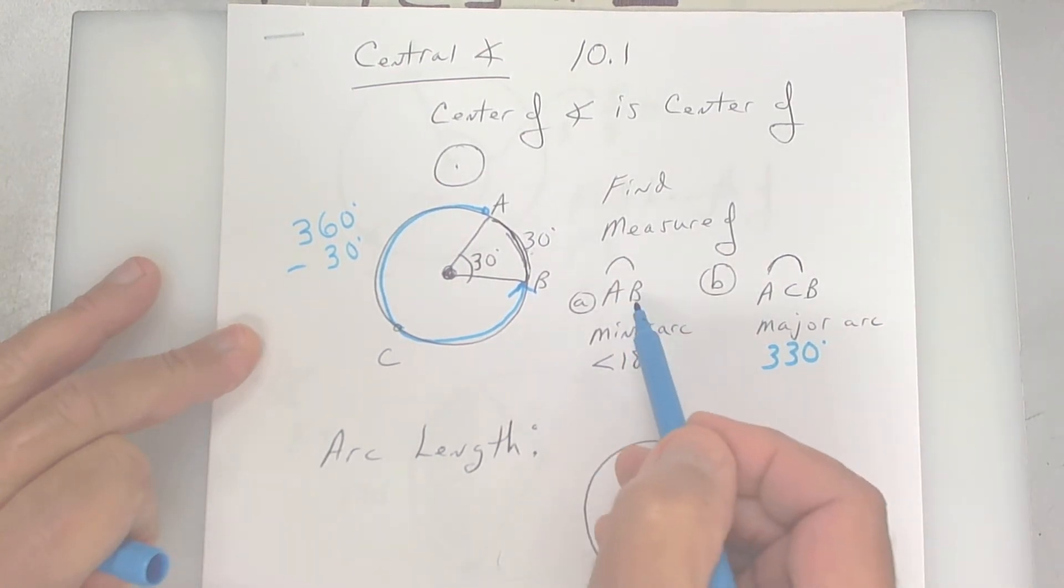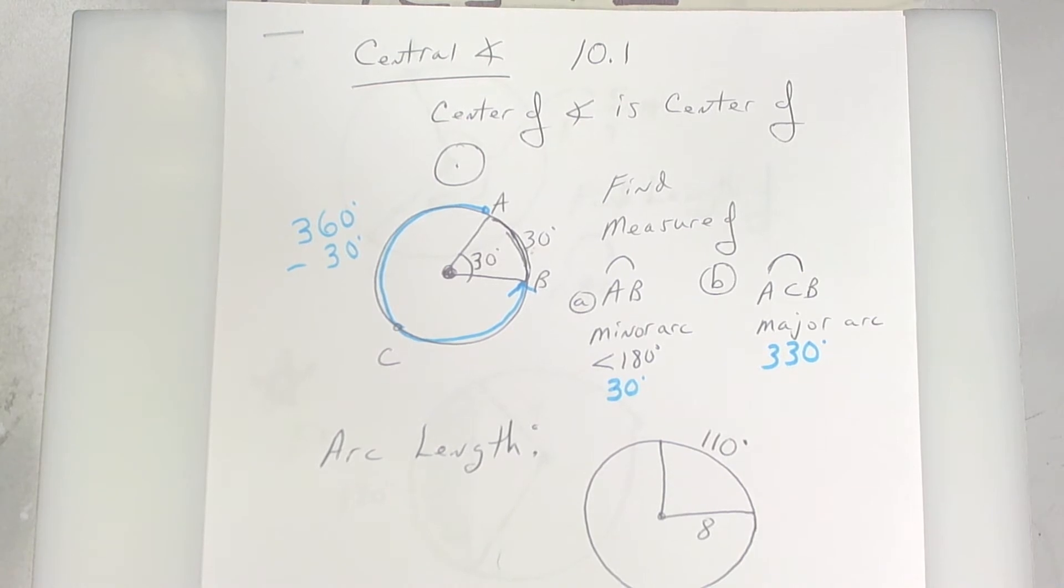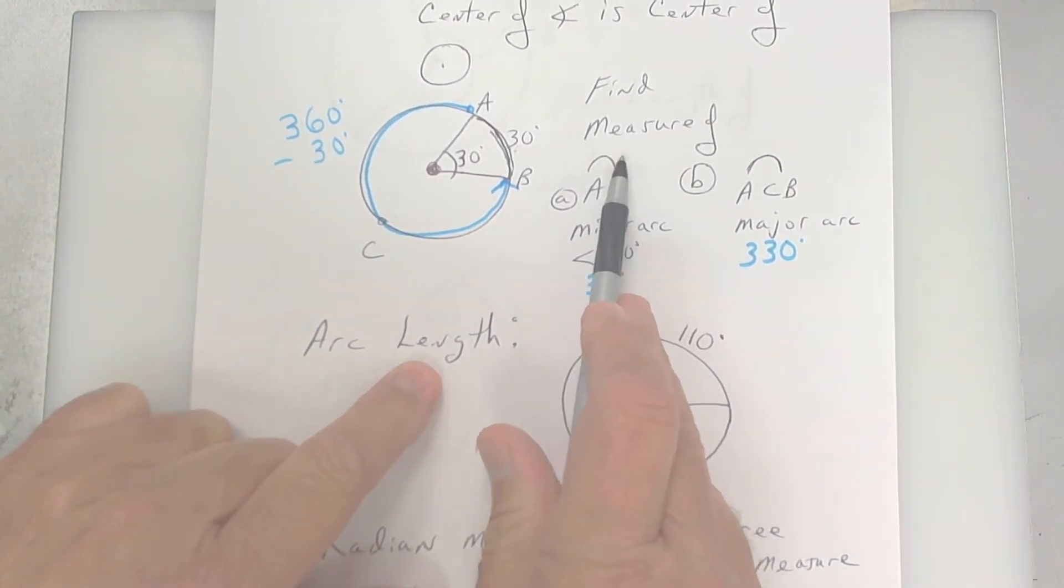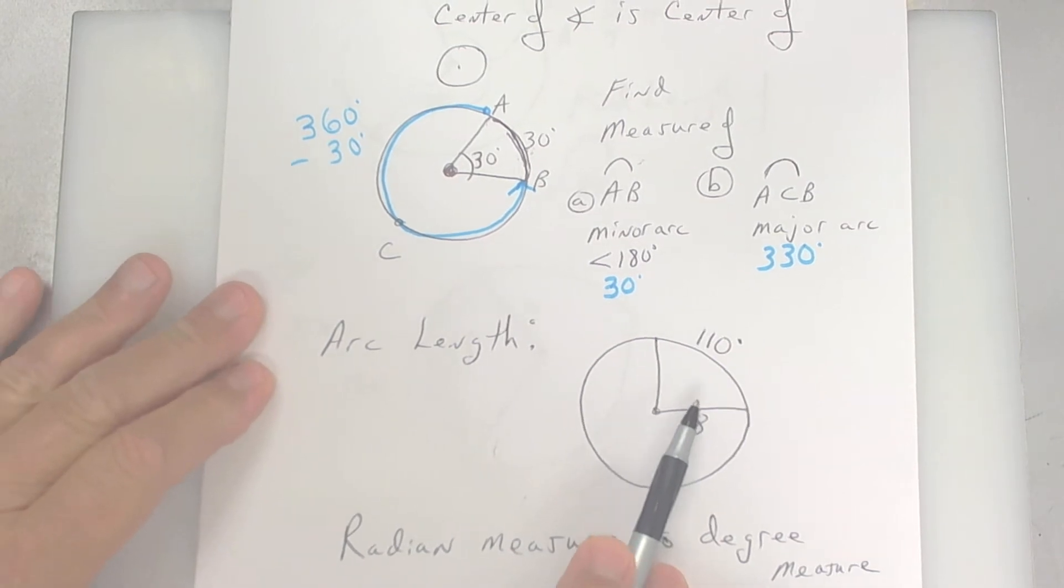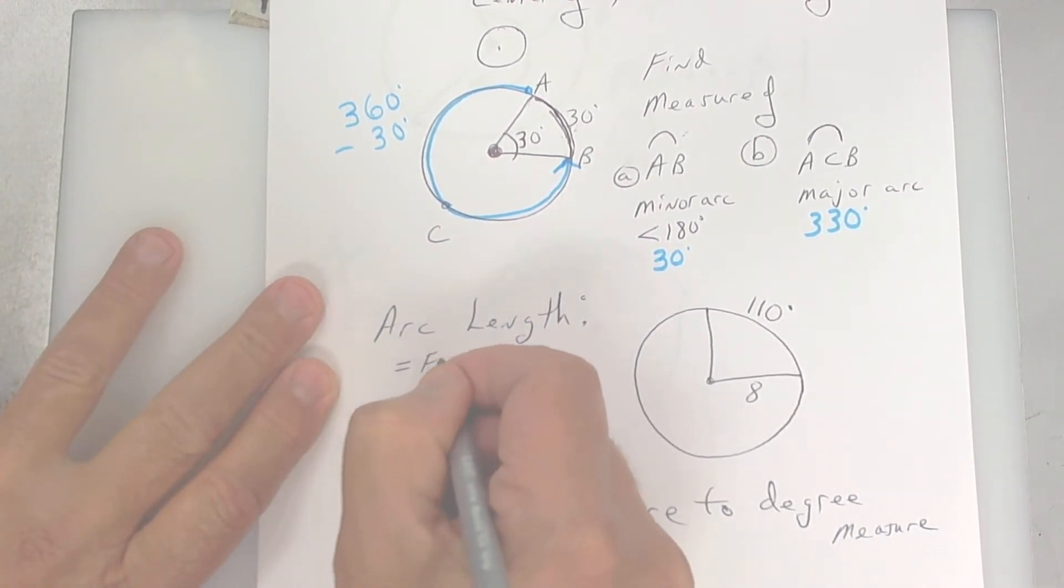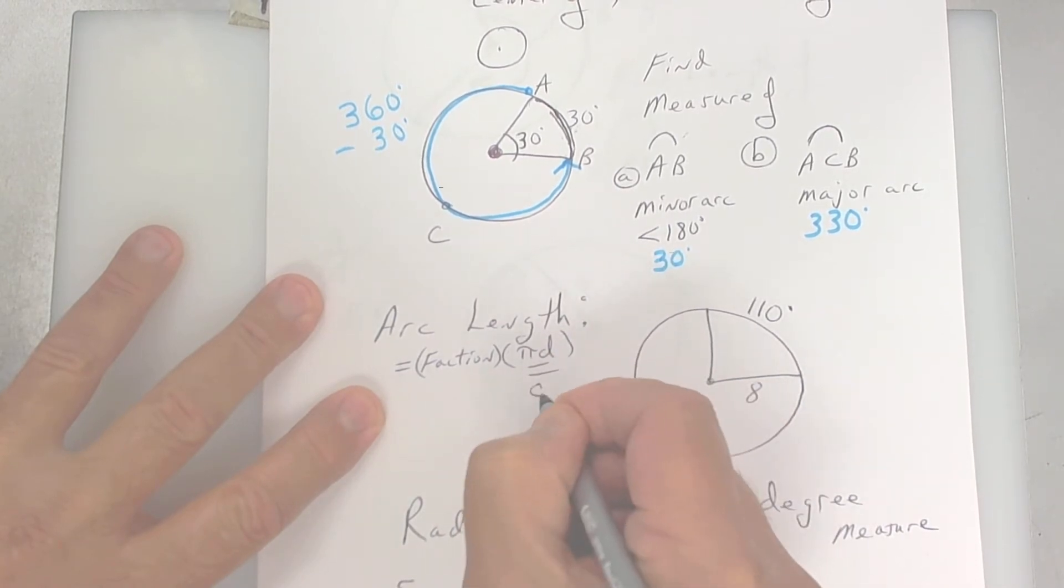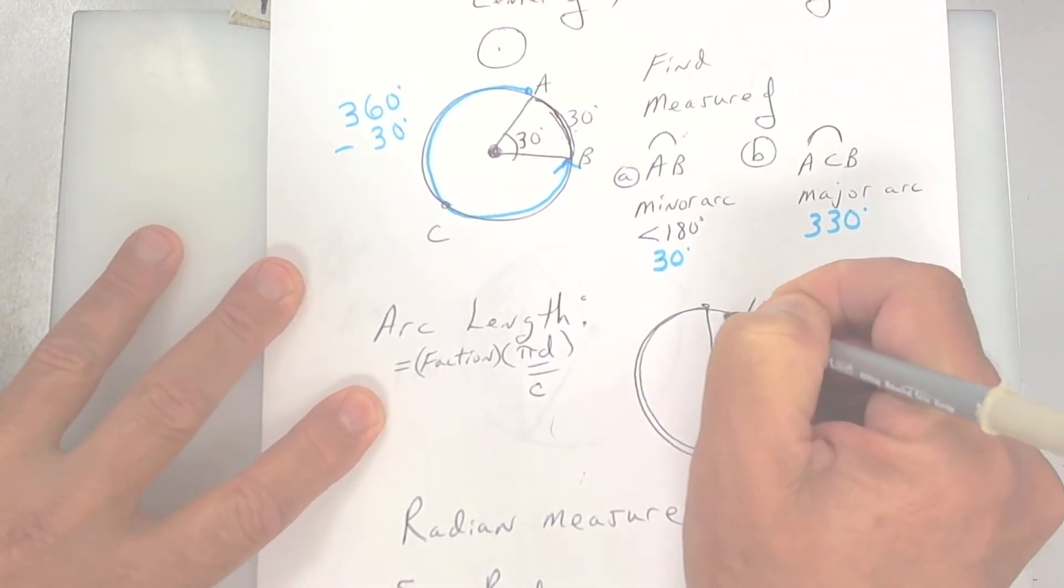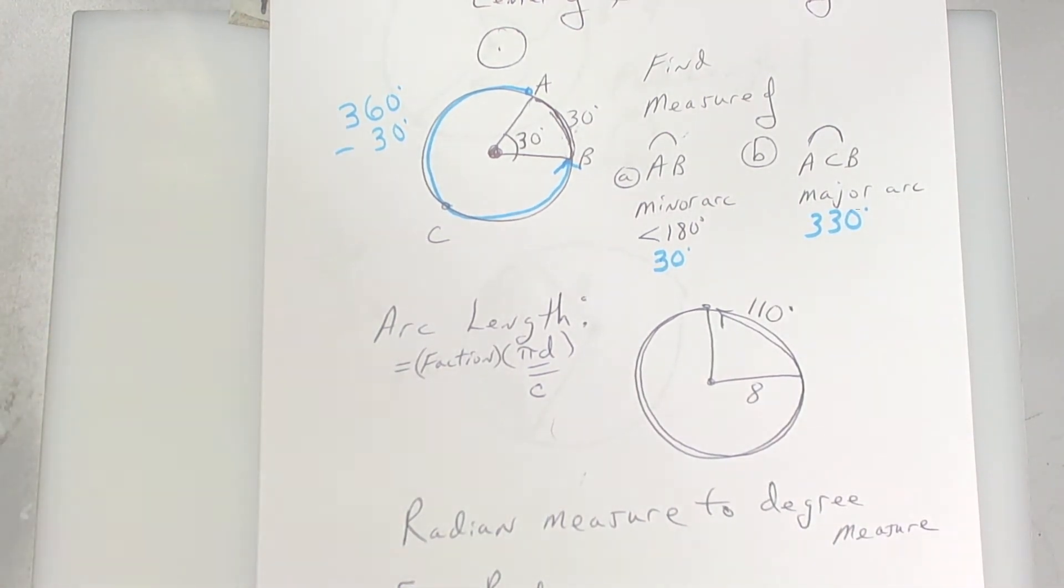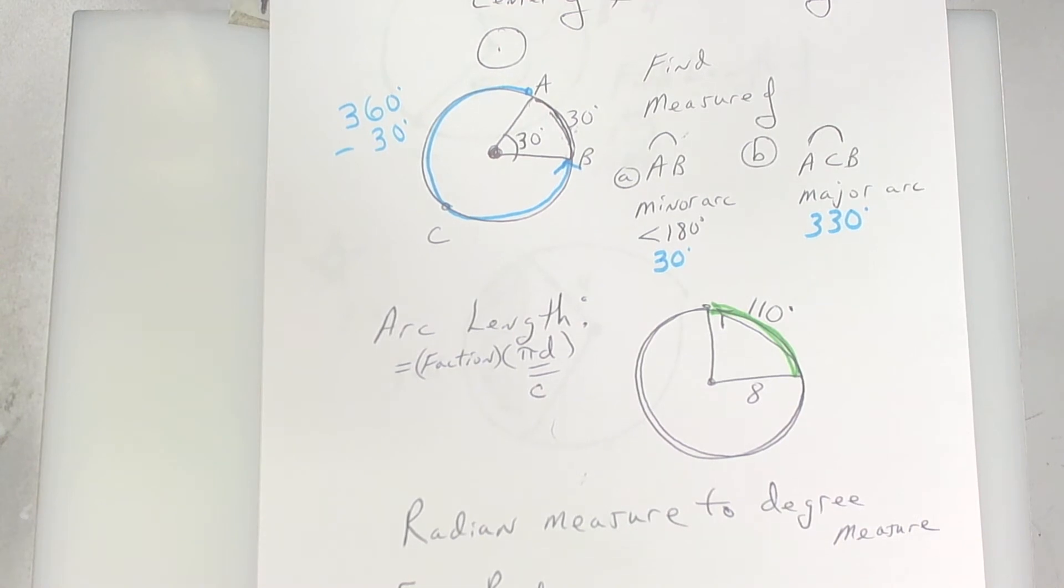So to answer these questions, arc AB has a measure of 30 degrees. Now, that is not the actual length. See, there's a difference between the measure of the arc and how long the arc is actually, or how long it actually is. So if you want to figure out how long it is, then you've got to use a different formula. You've got to use a fraction times pi times diameter. You see, pi times diameter is really circumference, and circumference is the distance all the way around. But we don't want to go all the way around. We only want to go from here to here. So if you want to figure out this right here, you need to use this formula here.